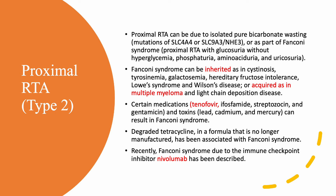Proximal RTA can be an isolated genetic disorder with pure bicarbonate wasting due to genetic mutation — the names are shown on screen. Or it can be part of Fanconi syndrome, where not only do you have wasting of bicarbonate, but also wasting of glucose. Glucosuria — or glycosuria, both are correct — occurs without hyperglycemia, so the patient does not have diabetes. You also have phosphaturia — phosphate in the urine.